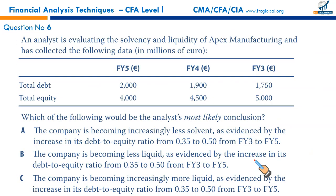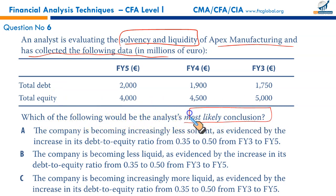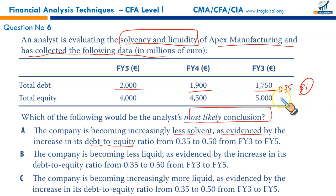Next: an analyst is evaluating the solvency and liquidity of Apex Manufacturing using total debt and total equity. The first conclusion states the company is becoming increasingly less solvent as evidenced by an increase in its debt-to-equity ratio. Calculating: FY3 = 1750/5000 = 0.35, FY4 = 1900/4500 = 0.422, FY5 = 0.50. The debt as a fraction of equity is increasing, indicating the firm is becoming less solvent.